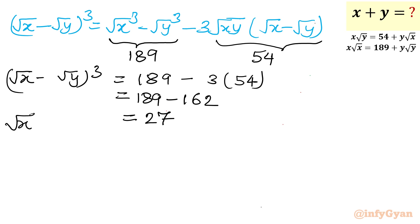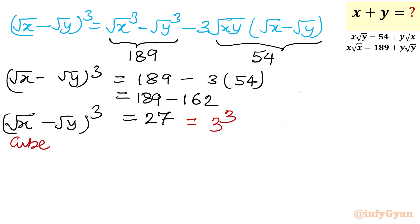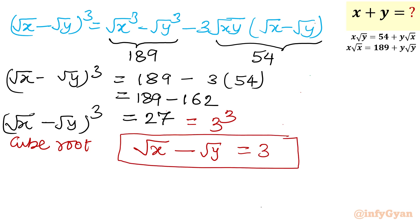So the left-hand side is (√x − √y)³ = 27. Writing 27 as 3³ and taking the cube root of both sides, we get √x − √y = 3. This is equation 5.